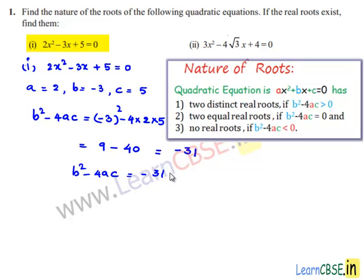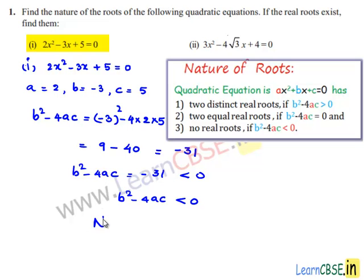This is less than 0. Since the discriminant b² minus 4ac is less than 0, the given equation has no real roots.